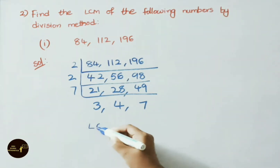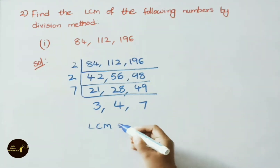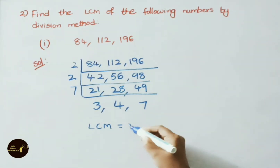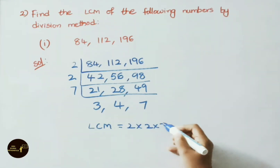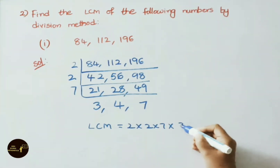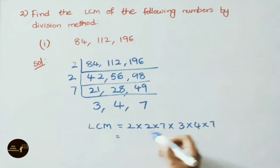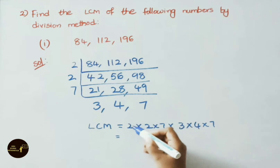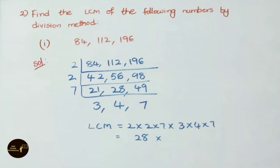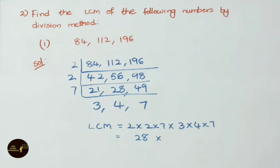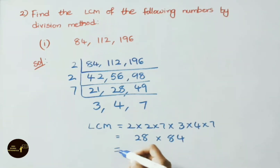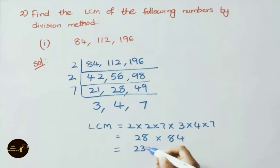Now let us find the LCM. LCM = 2 × 2 × 7 × 3 × 4. That is: 7 × 2 = 14, 14 × 2 = 28, 3 × 4 = 12, 12 × 7 = 84, 28 × 84 = 2352.